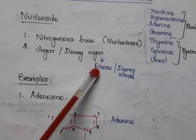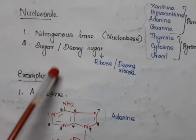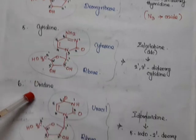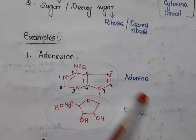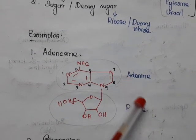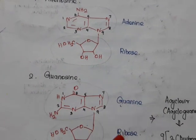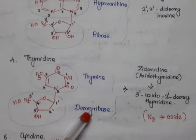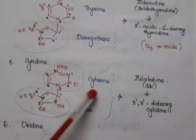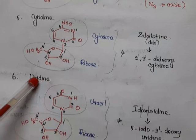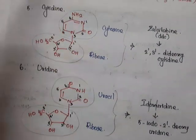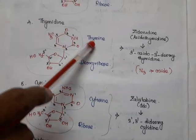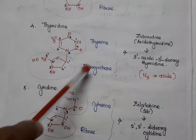The sugar in a nucleoside may be ribose or deoxyribose. Examples of nucleosides are adenosine, guanosine, inosine, thymidine, cytidine, and uridine. Adenosine is the combination of adenine and ribose. Guanosine is the fusion of guanine with ribose. Hypoxanthine with ribose gives inosine. Thymine with deoxyribose gives thymidine. Cytidine is the fusion of cytosine with ribose. Uridine is the combination of uracil with ribose. The nitrogenous bases are usually combined with ribose — the exception is thymidine, which uses deoxyribose.